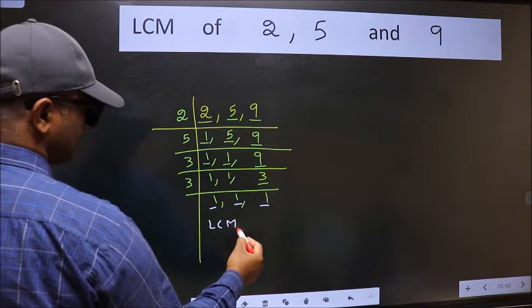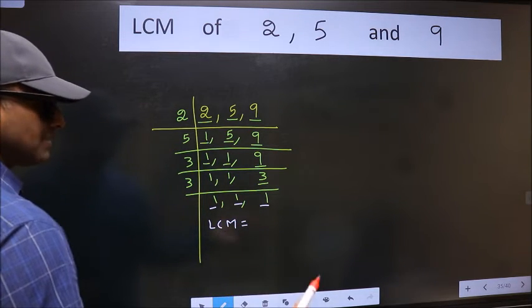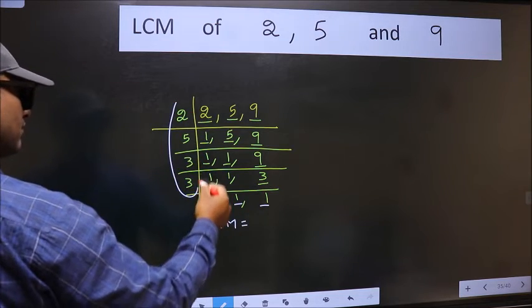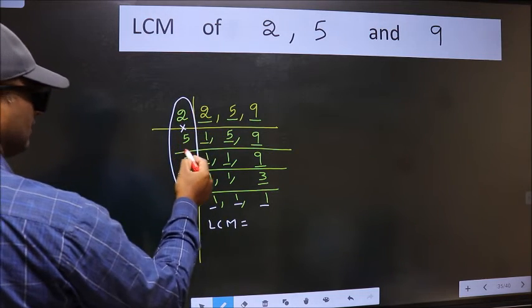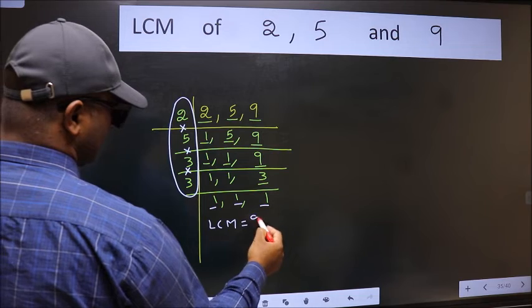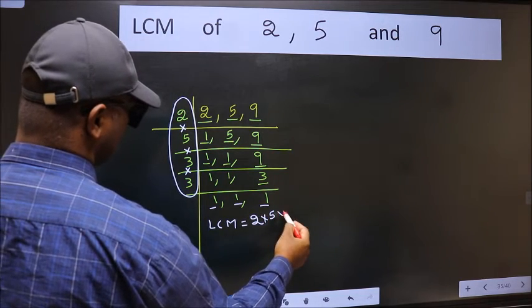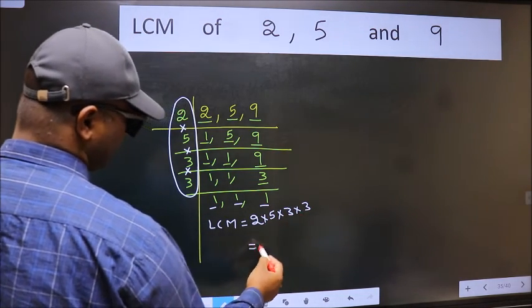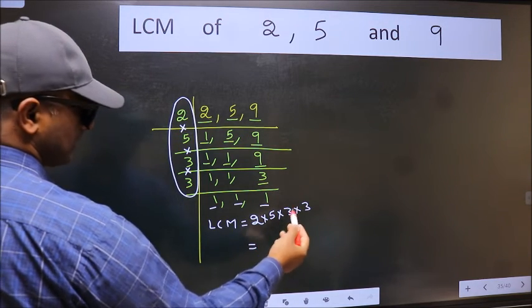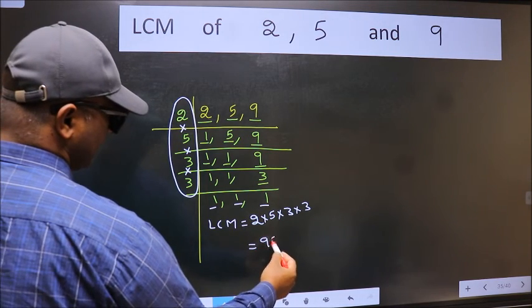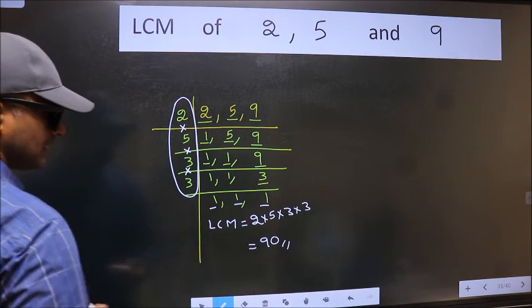So our LCM is the product of these numbers. That is 2 × 5 × 3 × 3. When we multiply these numbers, we get 90 as our LCM.